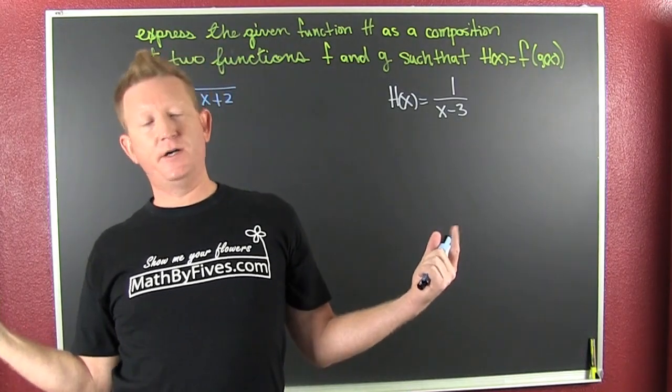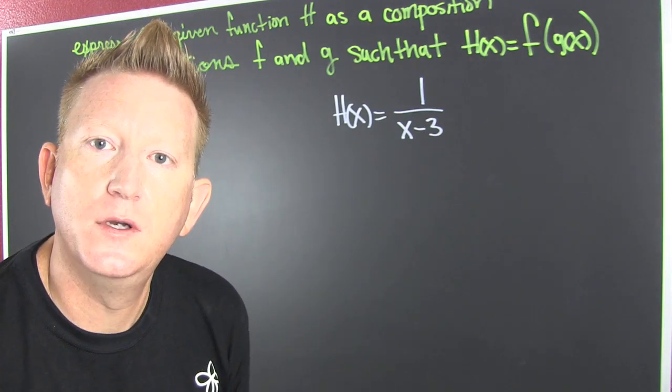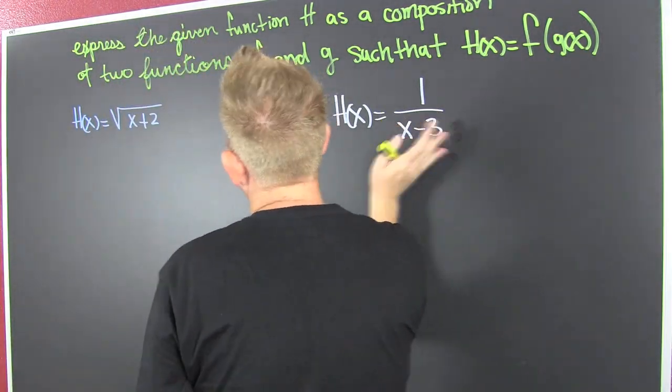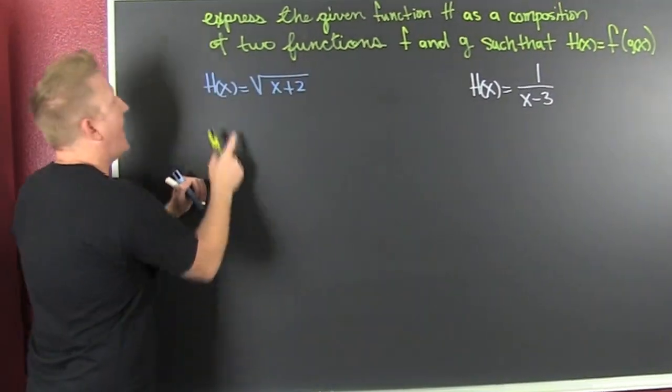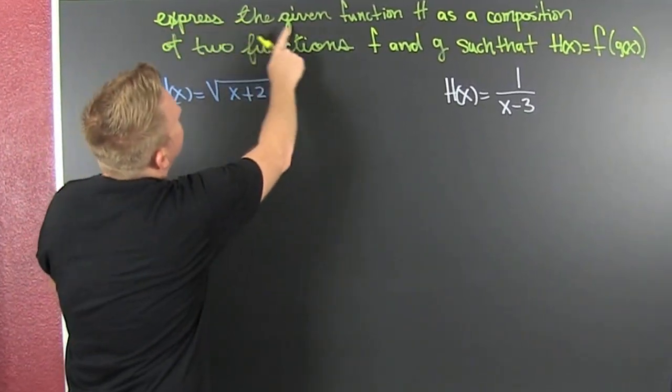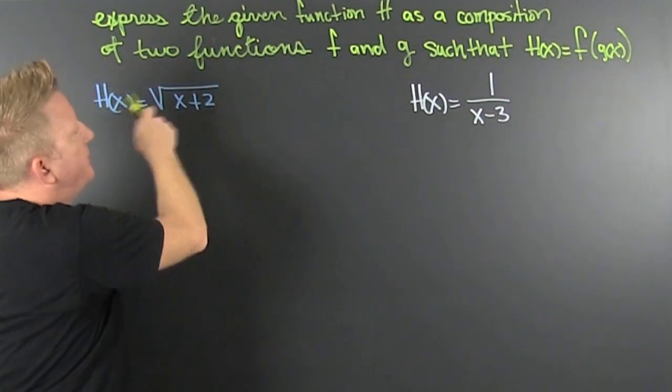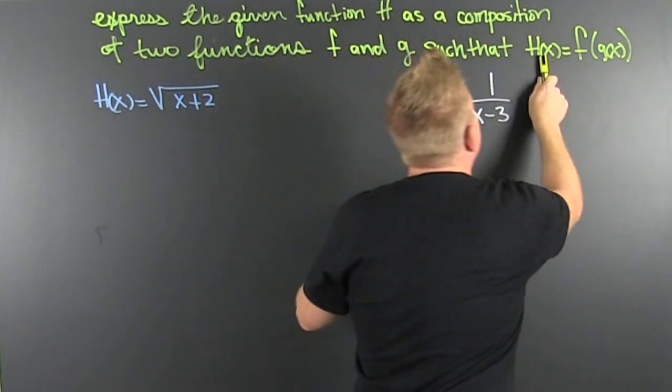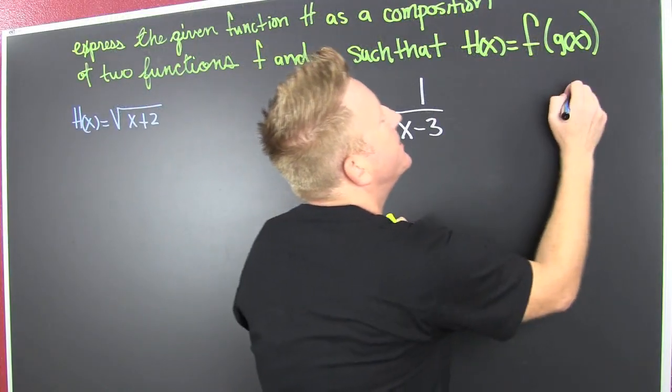We're talking decomposition of functions. I don't know why you make this so hard. What am I talking about? I need to cover up something, Stormy Daniels. Wait, no, wait, no, wait, yes! How do I do this? I want to express the given function h as a composition of two functions f and g such that the function is a composition of the two.